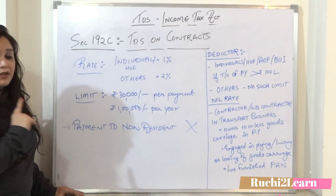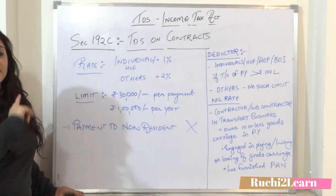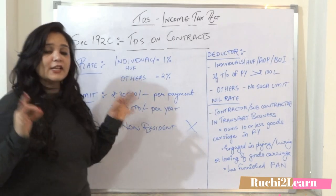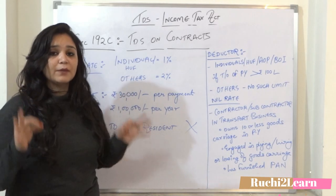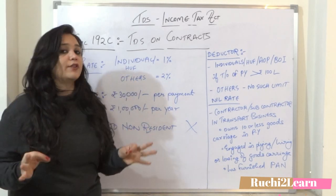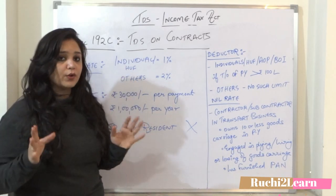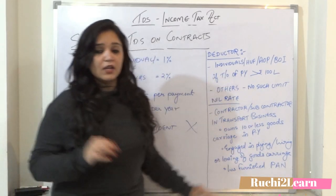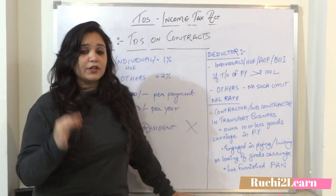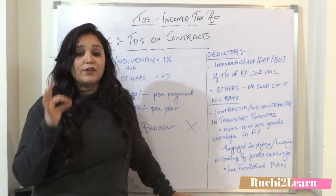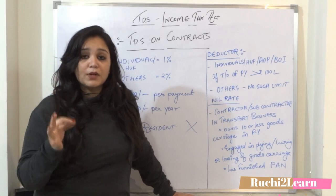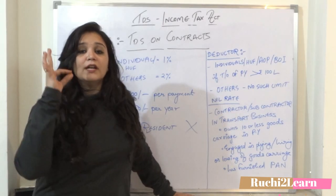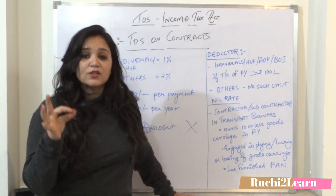Payment to non-residents will not apply to this section. This section is applicable only to resident contractors. Next, who will be the deductor? This is very important. The deductor will only be the person who is liable for tax audit.